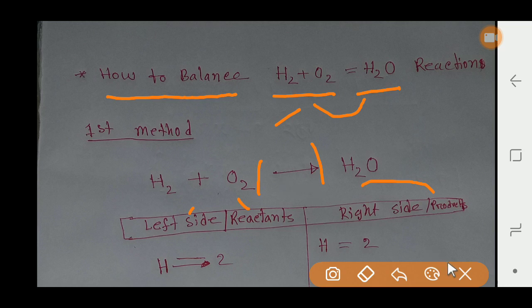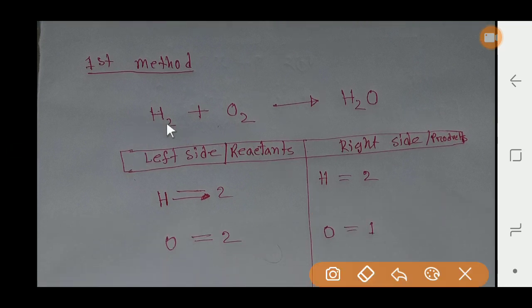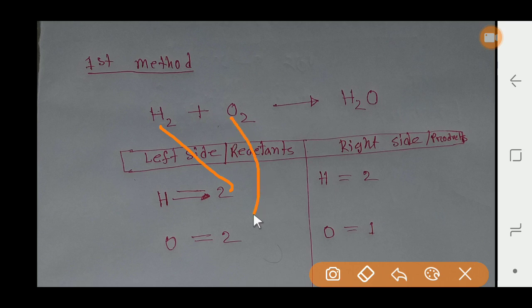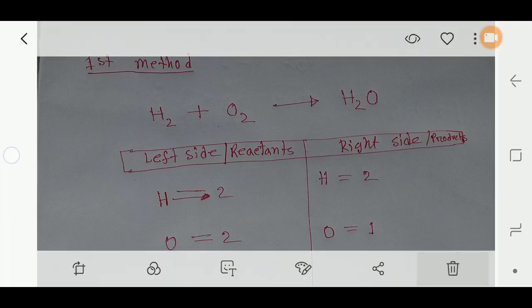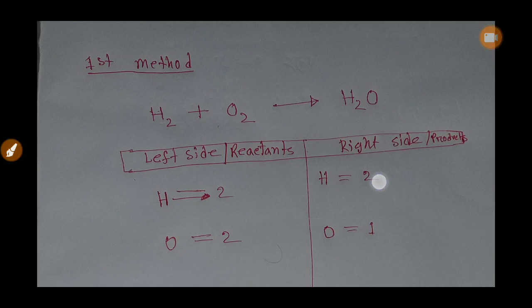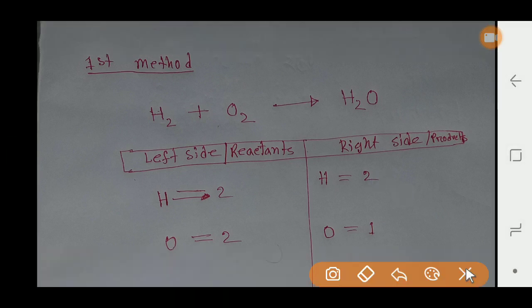On the left side we have two hydrogen and two oxygen. But on the right side we have two hydrogen and one oxygen. If we compare the number of atoms, hydrogen is balanced, but oxygen is not balanced.